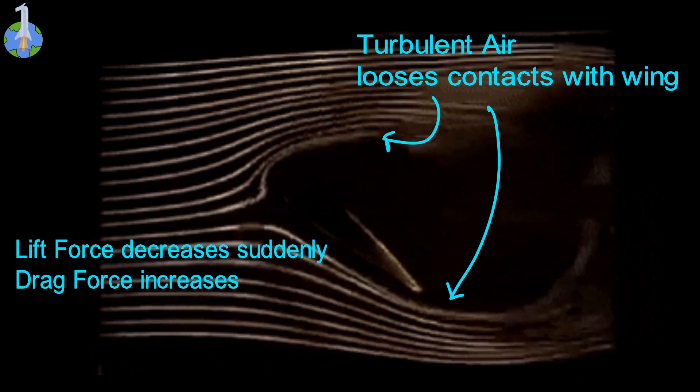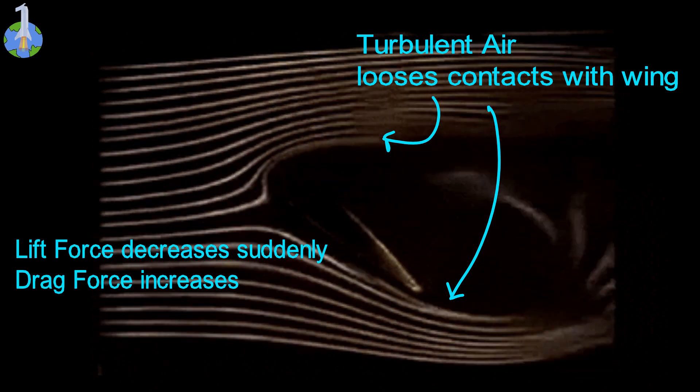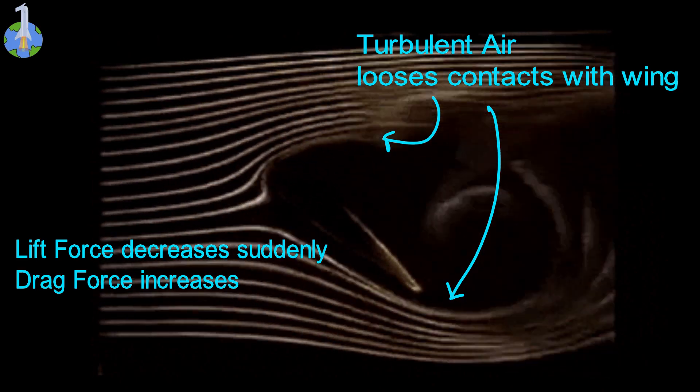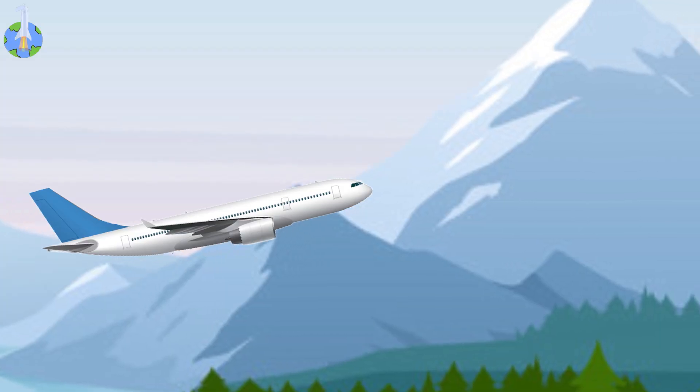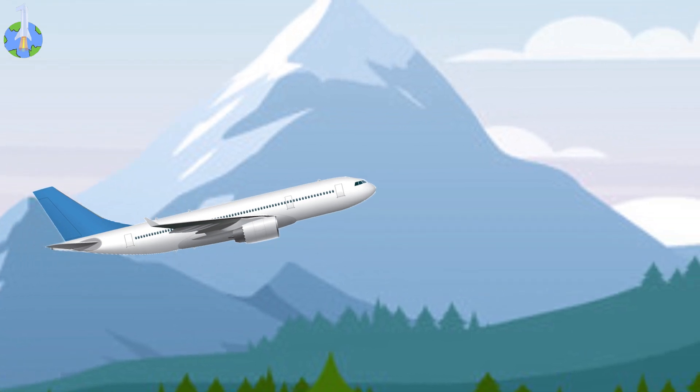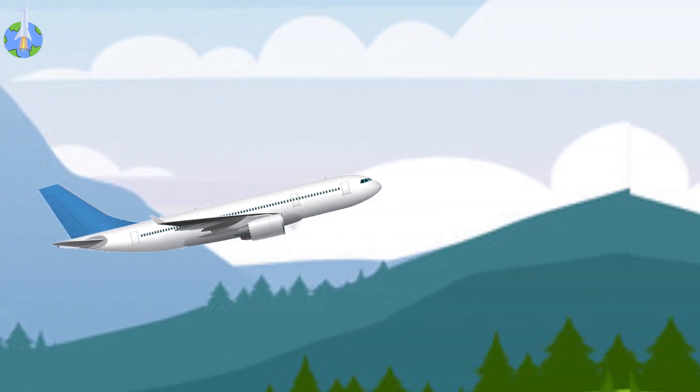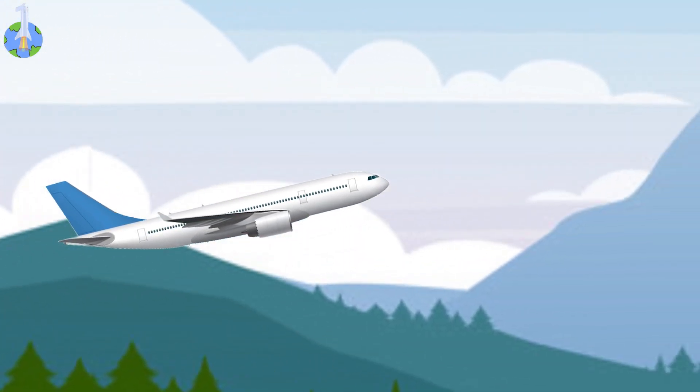When wing stalls, lift decreases rapidly and at the same time drag increases. The Nepal airplane was pointed upward, nosed up before crash. Let's understand what might have happened at the time.